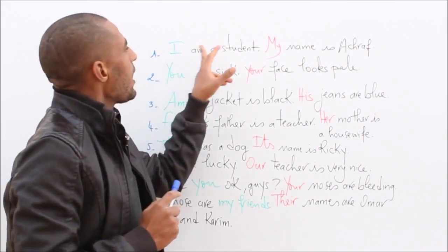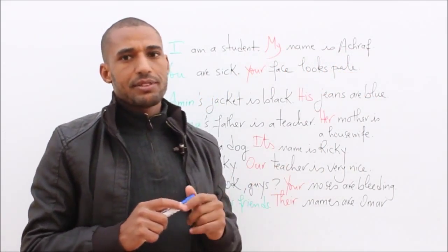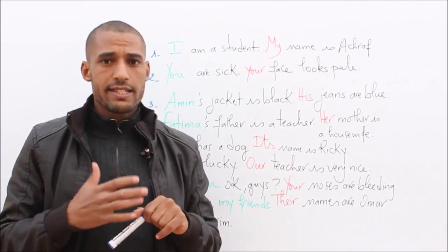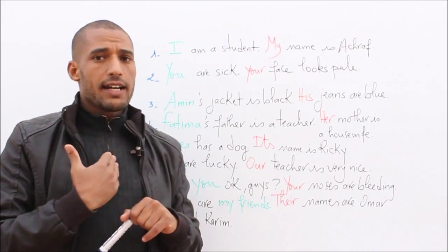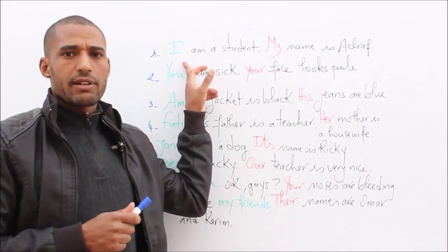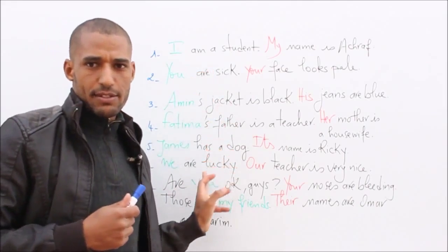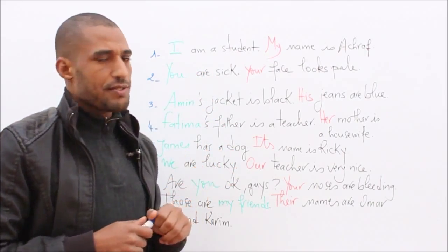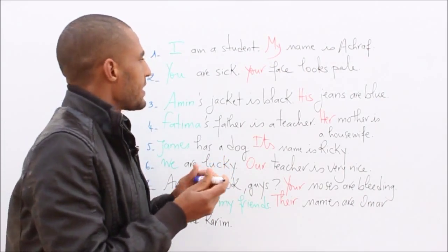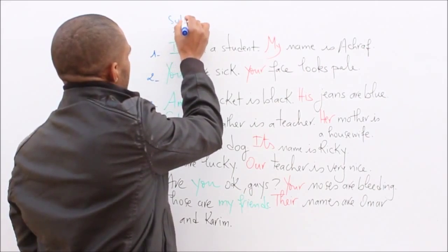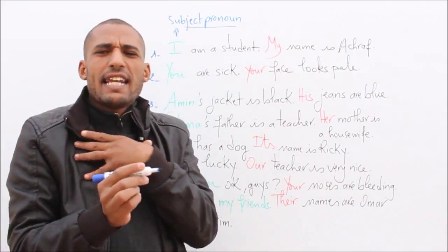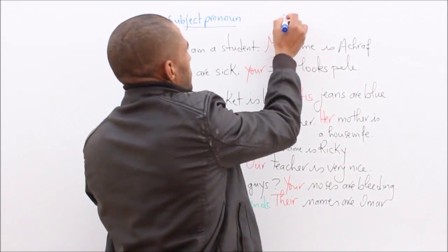Sentence number one says: I am a student. My name is Ashraf. We have 'I' here. 'I' in English is a subject pronoun. I am a student. I am a teacher. We should have previously learned the subject pronouns before. So 'I' is a subject pronoun. And 'my' — it means it belongs to me, it's my name — so it's a possessive adjective.